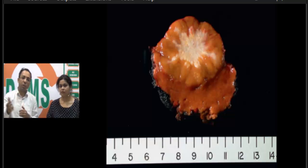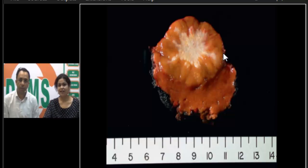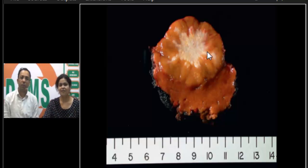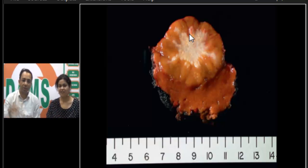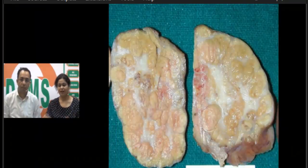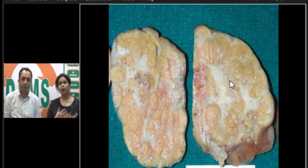Looking at the gross specimen, you can clearly see a well-demarcated lesion with no capsule, distinct from the normal liver in color. Right in the center is a white central stellate scar throwing off fibrous septae into the lesion — the same finding we saw on radiology. On a more fixed specimen, you can see how the fibrous septae split it into nodules, which is why we call it focal nodular hyperplasia.